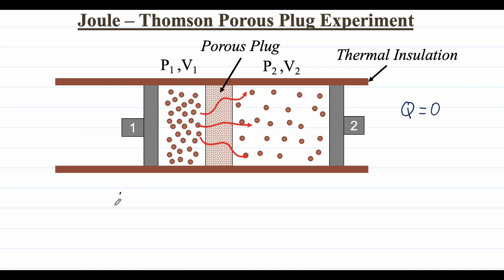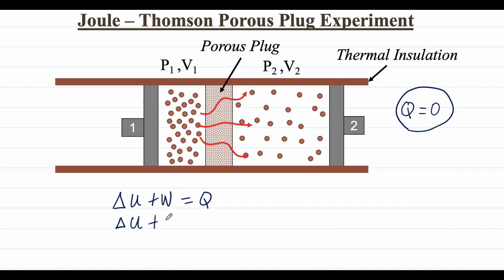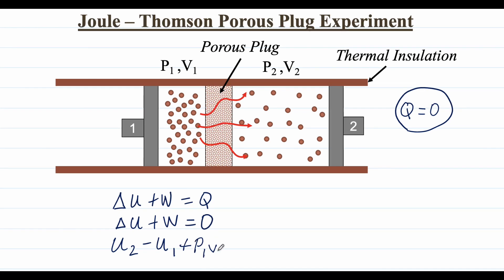Applying the first law of thermodynamics, ΔU plus W equals Q, and since Q equals zero, the expression becomes ΔU plus W equals zero. Substituting the values of work, this becomes U2 minus U1 plus P1 V1 minus P2 V2 equals zero.